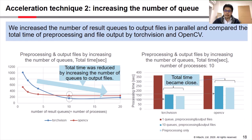Please look at the right figure. It indicates the comparison of total time when we change the number of result queues from 1 to 10, and also preprocessing only. Please note that the number of processes is 10 this time. As you can see, by increasing the number of result queues, the total time became close to the time for preprocessing only.